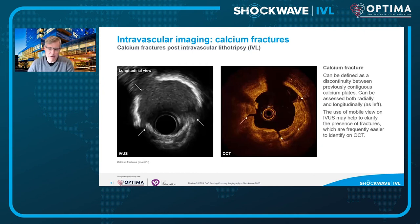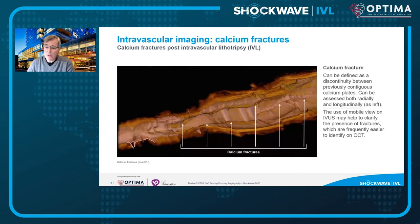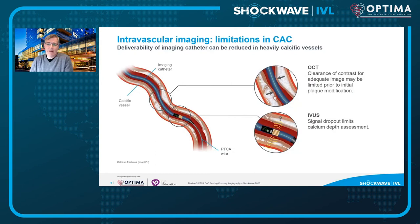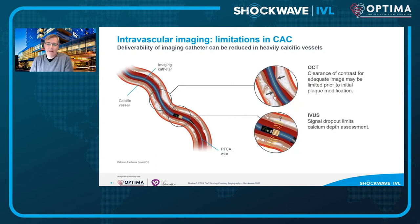Calcium fractures post-intravascular lithotripsy are very easily detected by OCT at the discontinuity of the calcium shelf; they can be seen by IVUS although it's a little tougher to appreciate them. Fracture can also be defined in the longitudinal view — a shelf of calcium over a long segment of the vessel showing a discontinuous disconnection, visible in both the cross-sectional and length views. In calcific vessels, delivery of the imaging catheter can be somewhat difficult, varying based on which IVUS catheter is used or the structure of the OCT catheter.